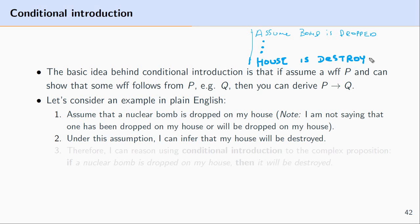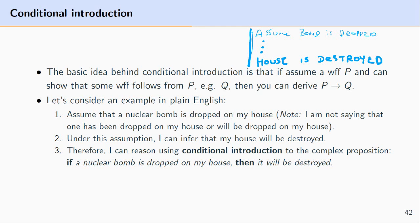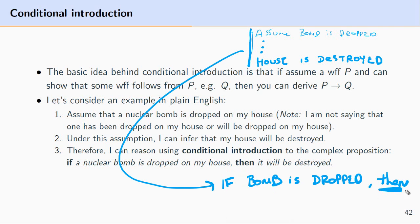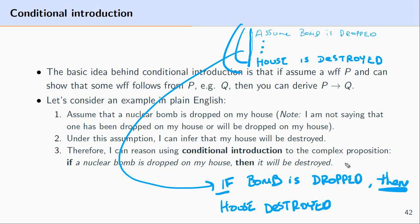From this assumption and from the conclusion we reached in the sub proof, we can use conditional introduction to derive the conditional: if the bomb is dropped on my house, then the house is destroyed. You can see how conditional introduction corresponds to an everyday form of reasoning — people make assumptions or suppositions all the time. Given that you can show a particular conclusion follows from an assumption, you can summarize that reasoning with a conditional: if the bomb is dropped then the house is destroyed.